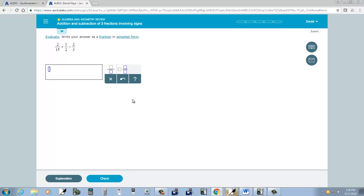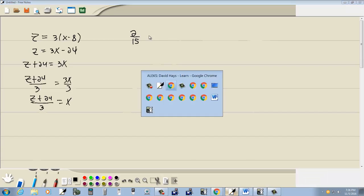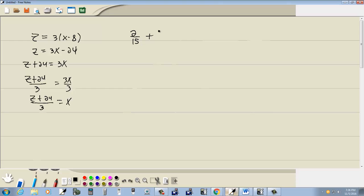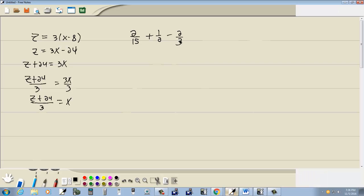If I have two fifteenths plus one half minus two thirds. In order to successfully do this. We need to find the least common denominator. The LCM of fifteen, two, and three. And some of you can look at it and see it.